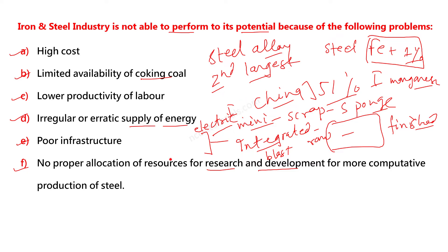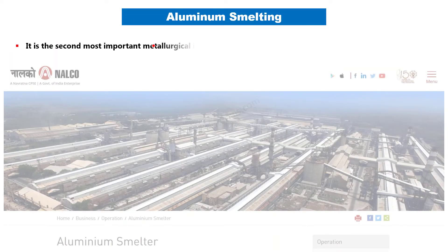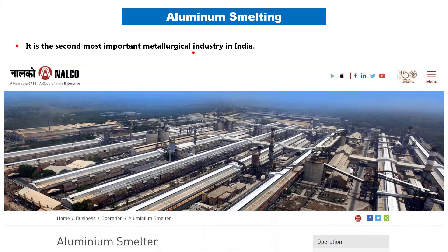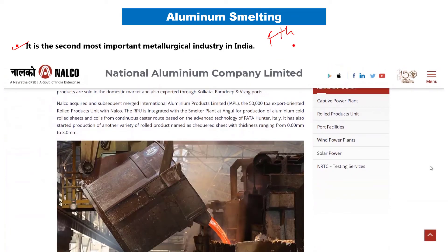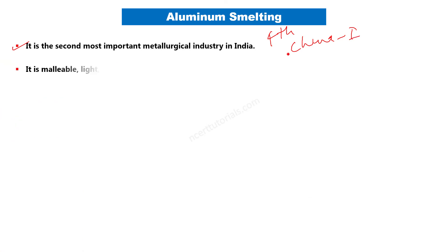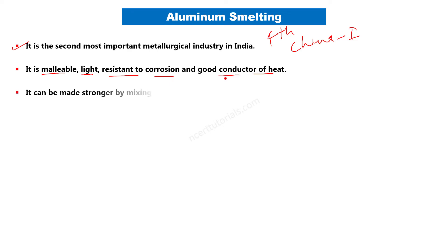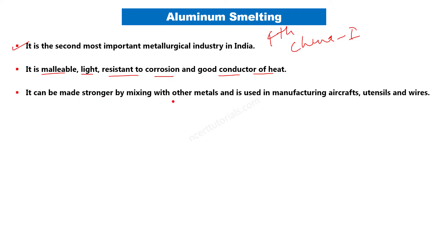اگلی industry aluminum smelting ہے۔ یہ India کی second most important metallurgical industry ہے اور اس میں India کا چوتھا مقام ہے جبکہ پہلا مقام China کا ہے۔ Aluminum malleable ہوتا ہے، ہلکا ہوتا ہے، resistant to corrosion ہے اور heat کا good conductor ہے۔ دوسری metals ملانے سے اسے stronger بنایا جا سکتا ہے۔ Aircraft میں special quality aluminum، utensils اور electric wires بنانے میں یوز ہوتا ہے۔